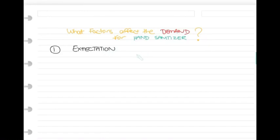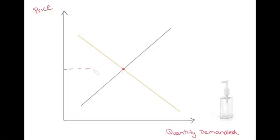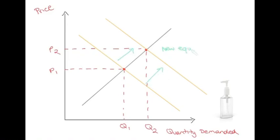We were expecting a virus and everyone knew they would need to sanitize often. Therefore, demand for the product increased. When demand increases, we shift the line to the right. This will create a new equilibrium and a higher price.